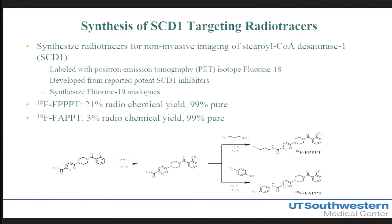Both compounds contain the PET nuclide fluorine-18, which is a very common nuclide for PET imaging. The aromatic amine in FAPPT is difficult to conjugate to, resulting in a lower yield — only about 3% radiochemical yield. The FPPT, containing a fluoropropylamine, is much easier to conjugate, and I was able to achieve a 21% radiochemical yield.